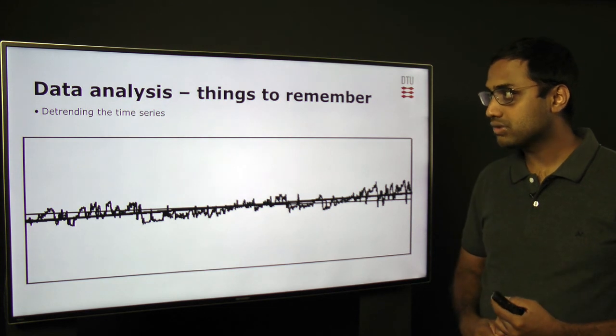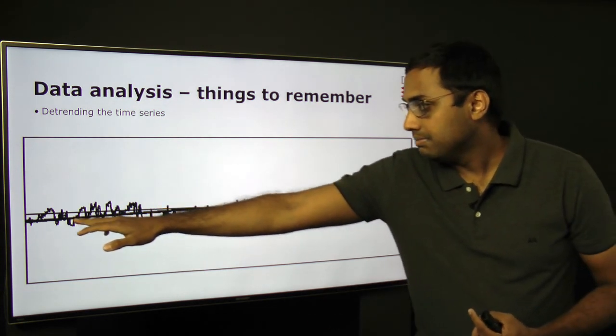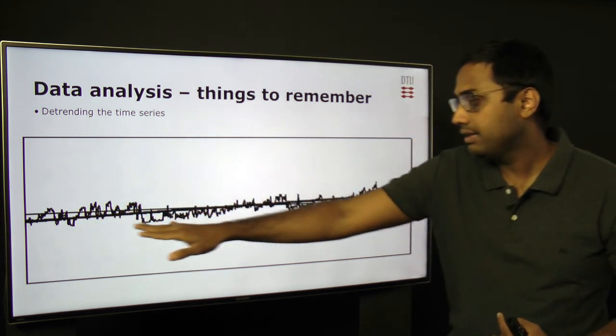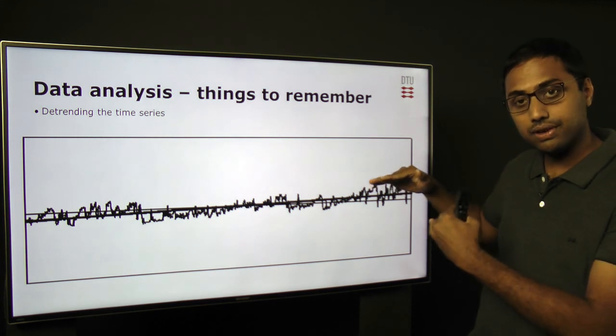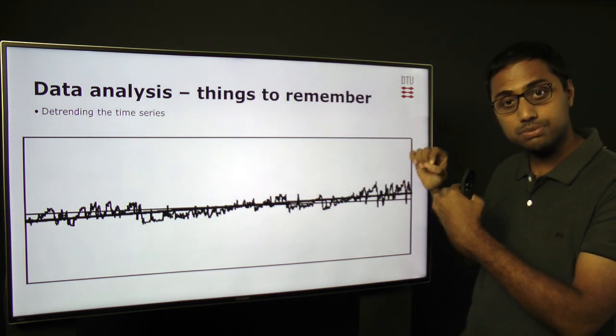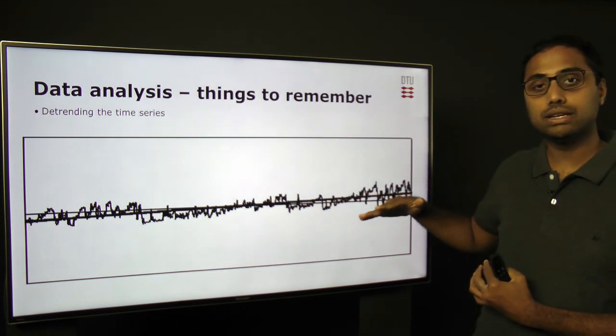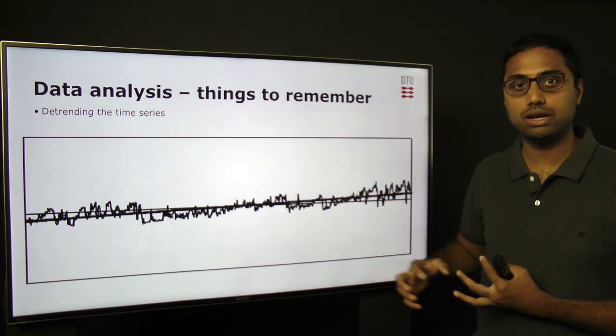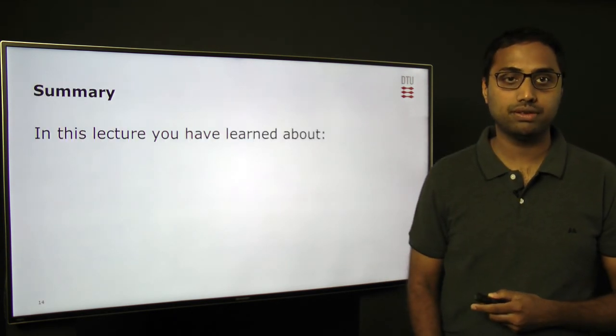There is something called de-trending the time series. As you can see here, if the mean is not constant, the magnitude of the fluctuations or the magnitude of the wind speed increases with time and there is some kind of a trend here, which adds to non-stationarity while analyzing data. And this is also something that we need to remove.